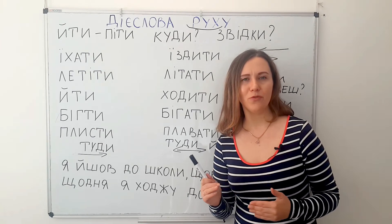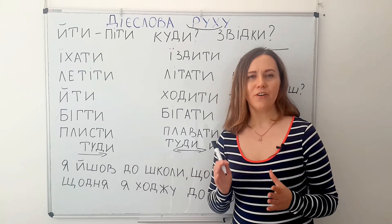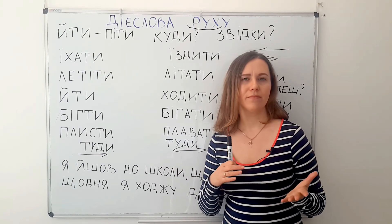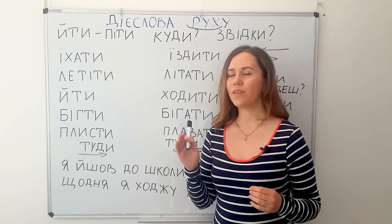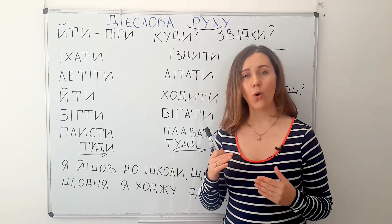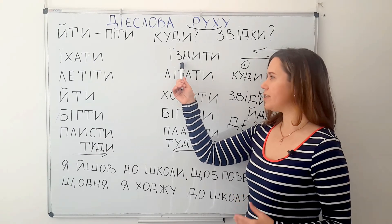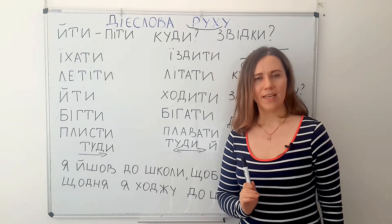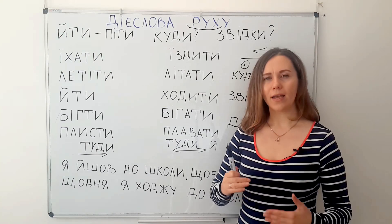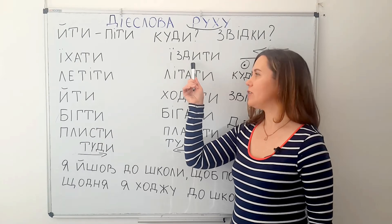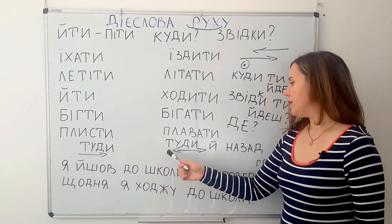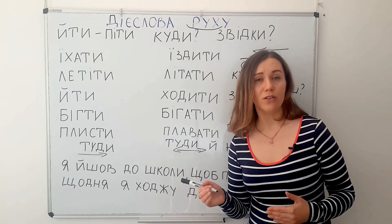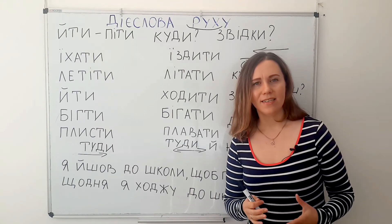When talking about verbs of movement in Ukrainian, we should learn two groups of them. The first group is one-way verbs — it means we go there one time, not regularly. If you want to say that we go somewhere regularly — maybe every day, every morning, every evening, every month — then we use ЇЗДИТИ. ЇЗДИТИ also means to go by car or bus, but it shows we are going there regularly. It's the way there and back — туди і назад — these are two-way or multi-way verbs.